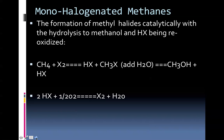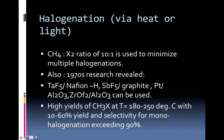Monohalogenated methanes: the formation of methyl halides catalytically with hydrolysis to methanol, and HX being re-oxidized. Methane and diatomic halogen yield one mole of HX and one mole of methyl halide, which you can then hydrolyze in a second step to methanol with generation of HX. That HX can be oxidized to diatomic halogen and thus recycled. Halogenation via heat or light: the methane to diatomic halogen ratio of 10 to 1 is used to minimize multiple halogenations. 1970s research revealed that certain supports — tantalum, platinum, alumina, zirconium, or an alumina catalyst — can be used. High yields of methyl halide at temperatures of 180 to 250 degrees Celsius with 10 to 60% yield and selectivity for monohalogenation exceeding 90% was reported.